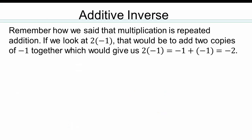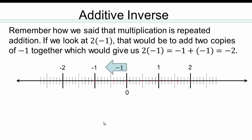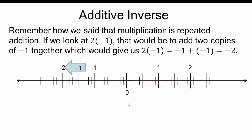Let's take a look at 2 times negative 1. Two copies of negative 1 added together gives negative 2. Another way to visualize negative numbers is on the number line: we have two copies of negative 1, so negative 1 distance once and negative 1 distance twice — when going negative 1, you're going to the left.